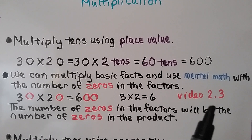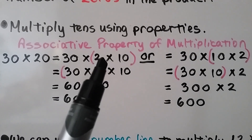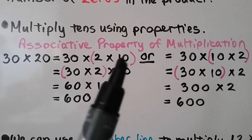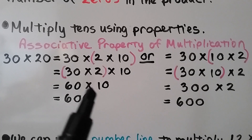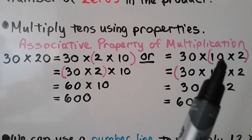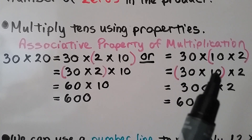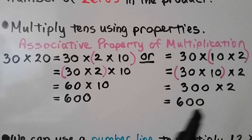We learned about that with mental math in video 2.3, which is linked in the description. We can also multiply tens using properties — the associative property of multiplication. For 30 times 20, we can look at the 20 as 2 times 10, giving us 30 times 2 times 10. Regrouping with the associative property, 30 times 2 is 60, then 60 times 10 is 600. We could also look at it as 30 times 10 times 2: 30 times 10 is 300, and 300 times 2 is 600.